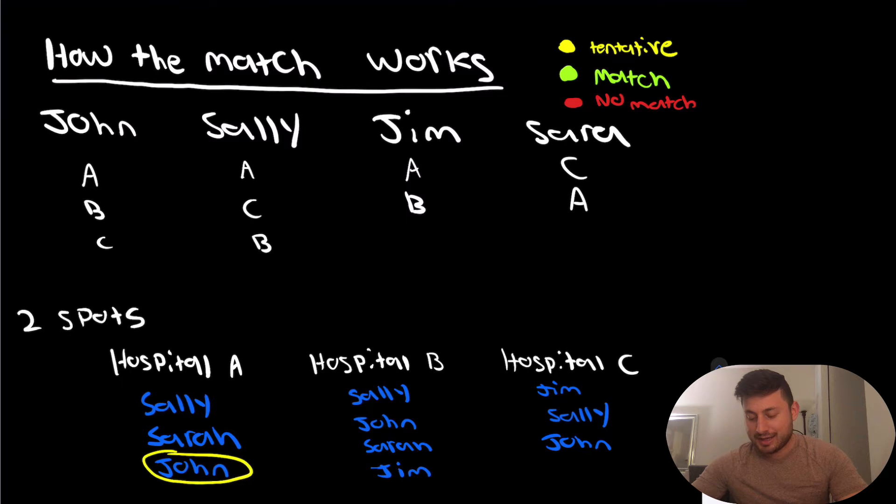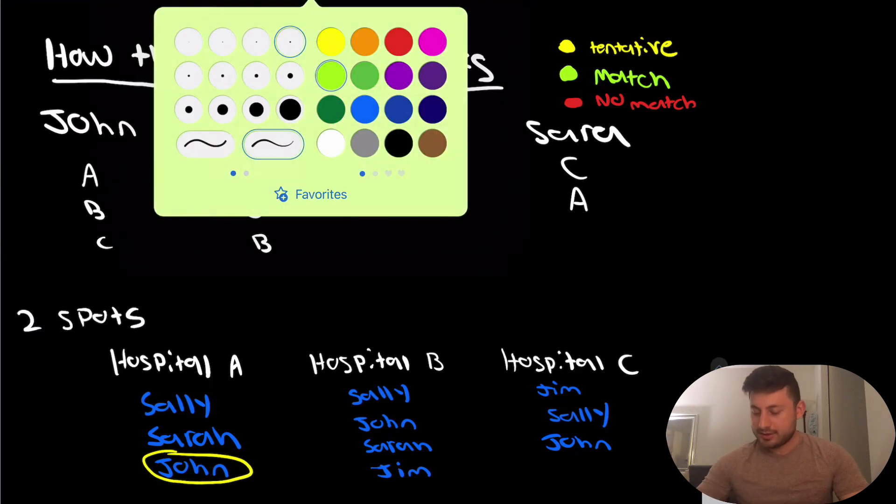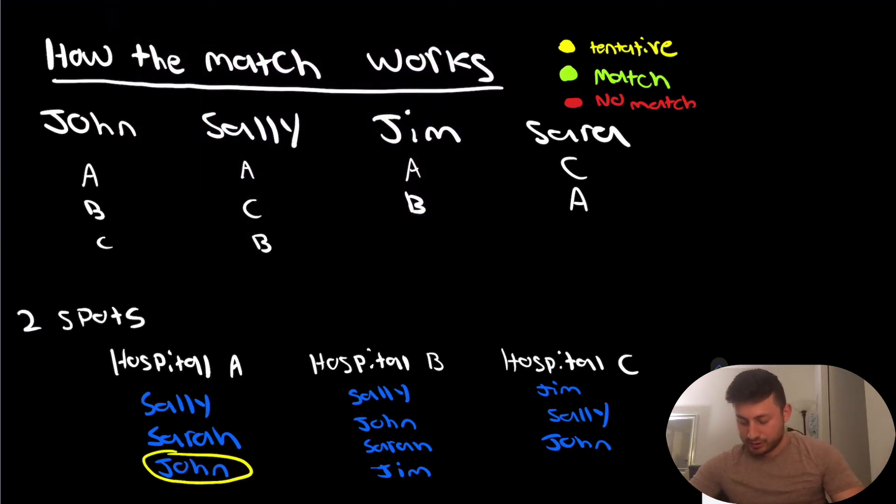Now, Sally ranked Hospital A number one, and Hospital A also ranked Sally number one. If that's the case, and there's two spots, that means Sally is automatically going to match. So now that we know that Sally matched there, we can circle Sally in green, and she's definitely going to match at Hospital A. So Sally matches at Hospital A, but John still is tentatively matching there.